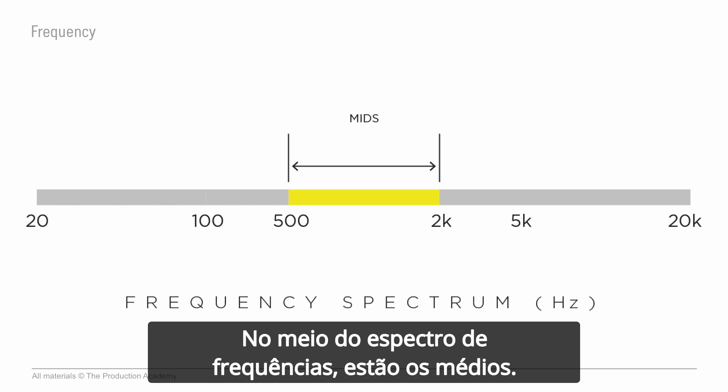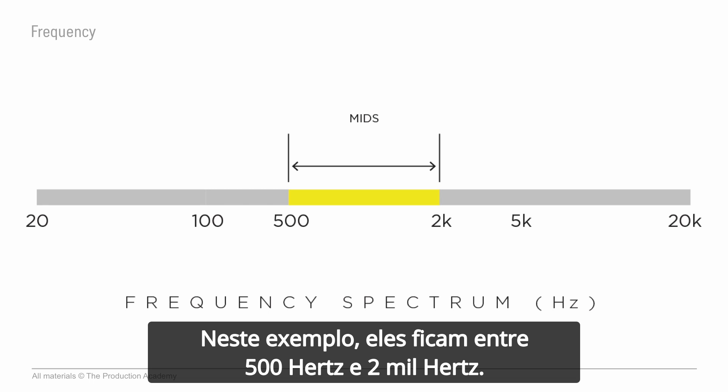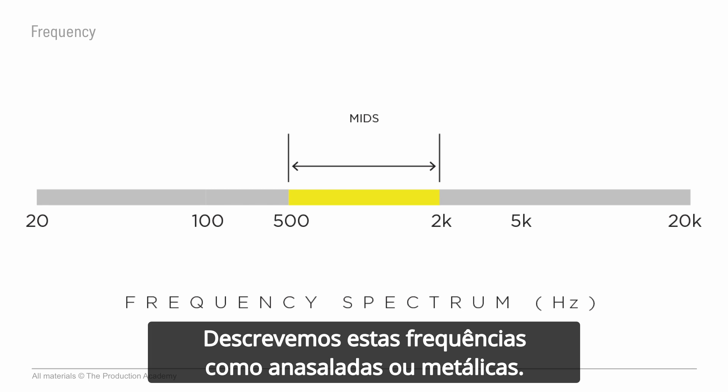In the middle of the frequency spectrum are the mids. In our example here, they range from 500 hertz to 2000 hertz. These frequencies are described as sounding boxy or nasal.